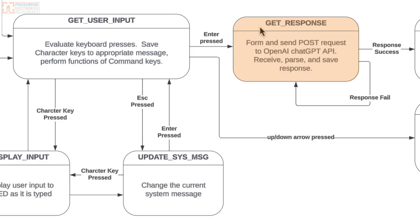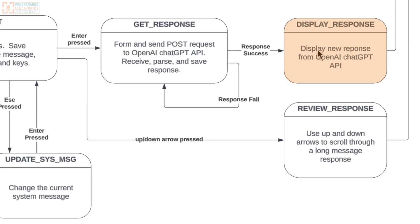In the 'get response' state, all of the messages between the user, the assistant, and the system message are formed into a JSON packet. They are sent to the OpenAI ChatGPT API with a POST request, and when the response comes back, the JSON is parsed and the appropriate part of the response is saved to a message. If the response fails — maybe the server isn't responding, it timed out, or the JSON was malformed — it re-enters its own state and attempts again.